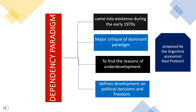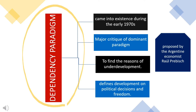Different explanations were suggested by different development theorists about the reasons for development and under-development. The dependency paradigm is one of the major critics of the dominant paradigm. It was first proposed by Argentine economist Raul Prebisch, who was the director of the United Nations Economic Commission for Latin America. Even though it was proposed in the 1950s, dependency theory gained prominence during the early 1970s.